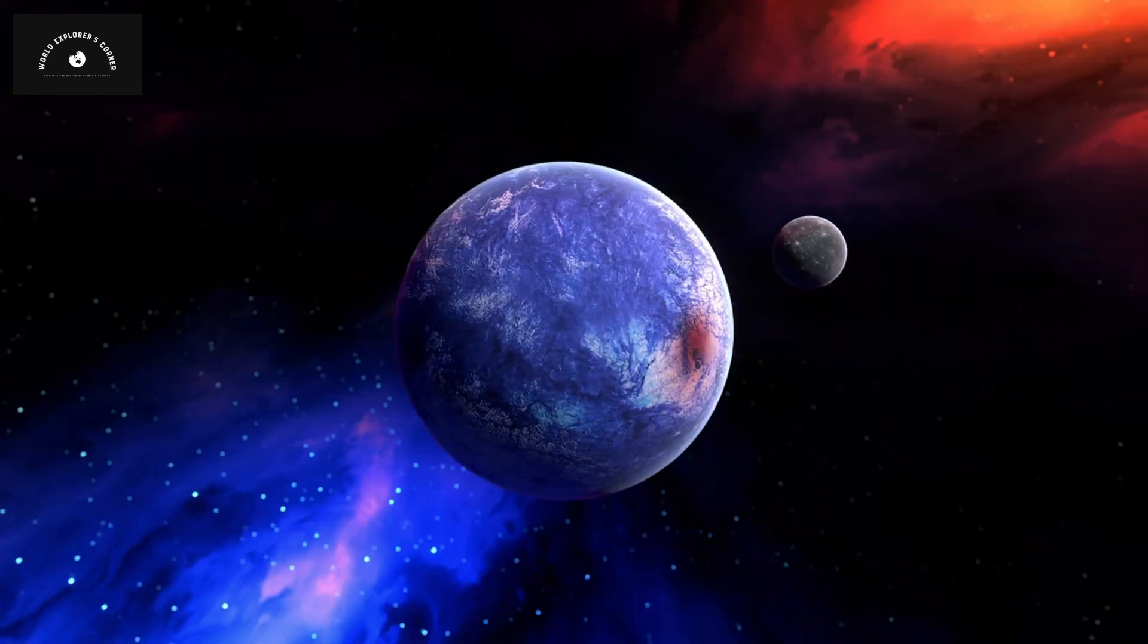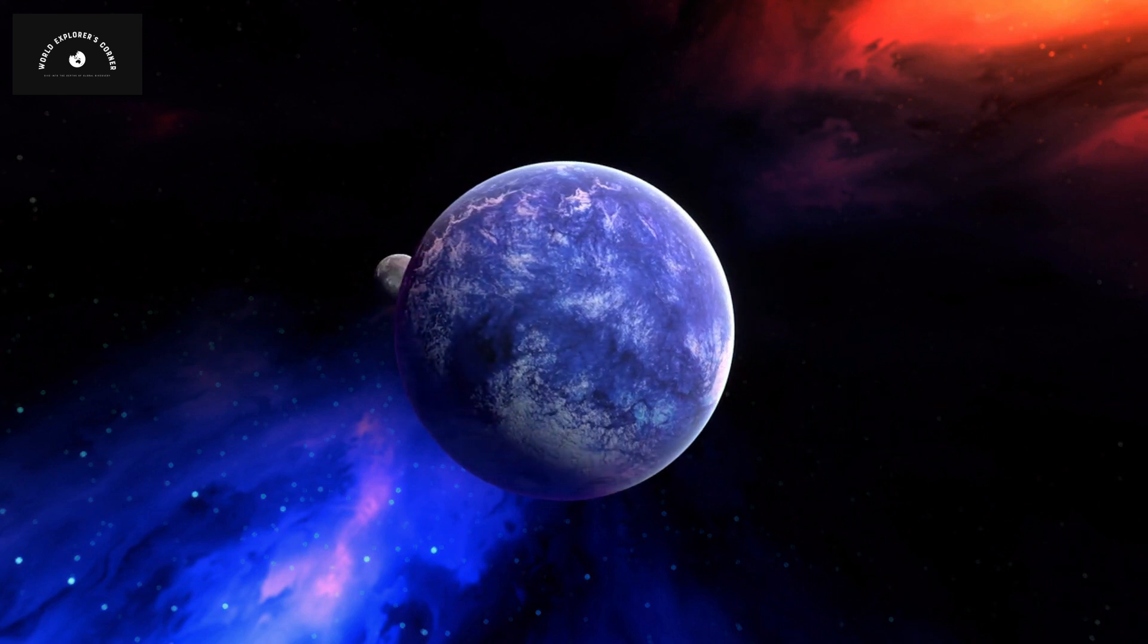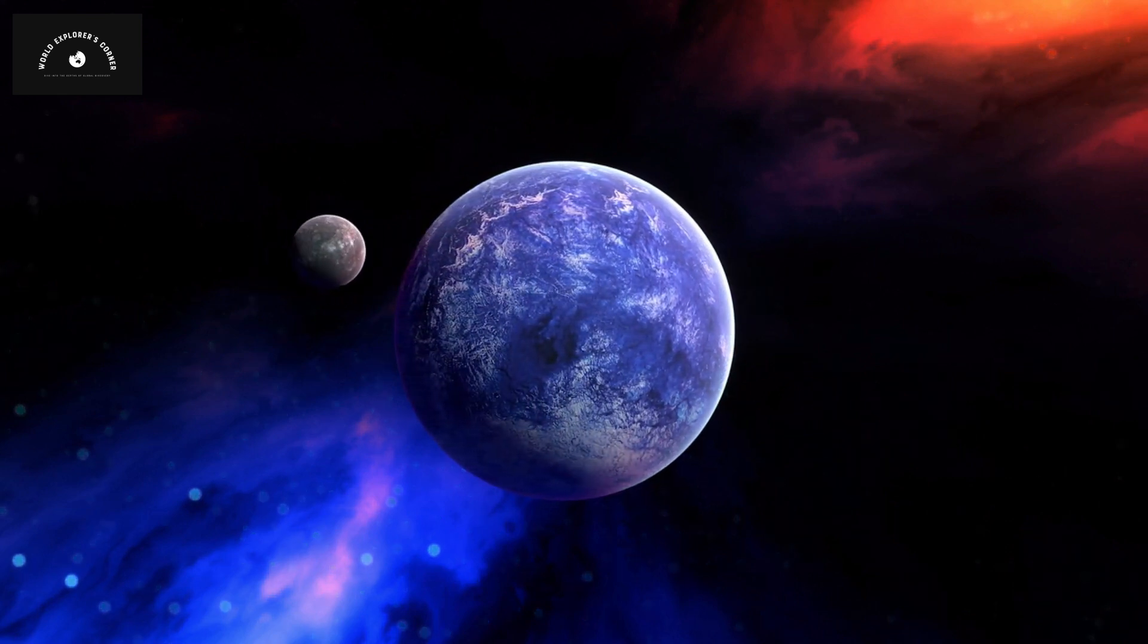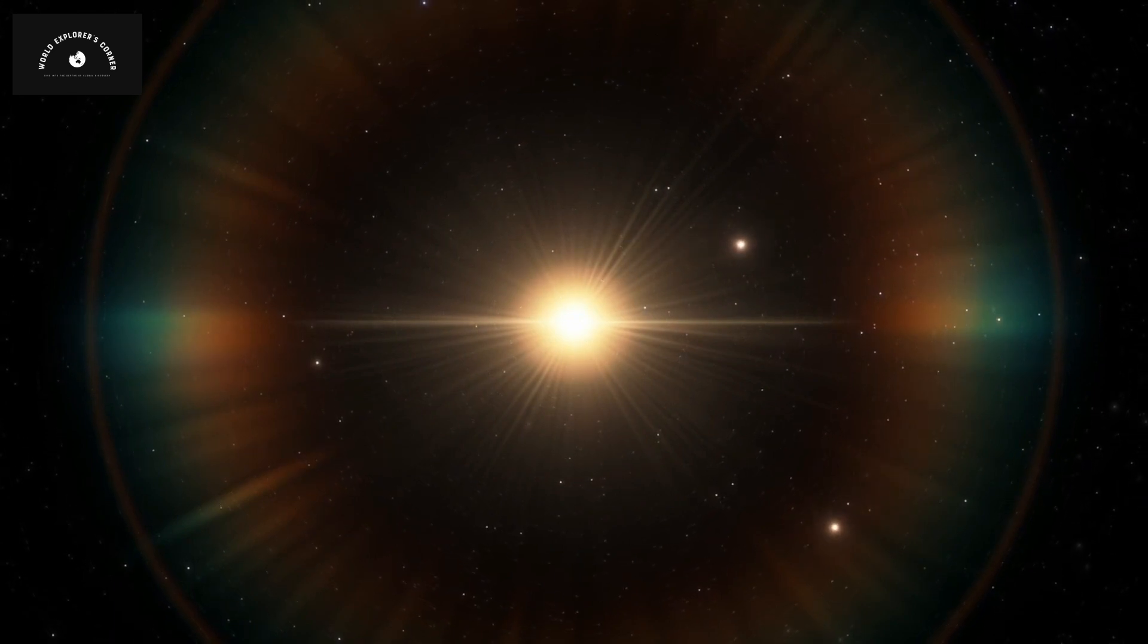When the planet passes in front of its star during its orbit, the star's light passes through the planet's atmosphere, causing it to scatter. Different atmospheric particles affect light in distinctive ways.